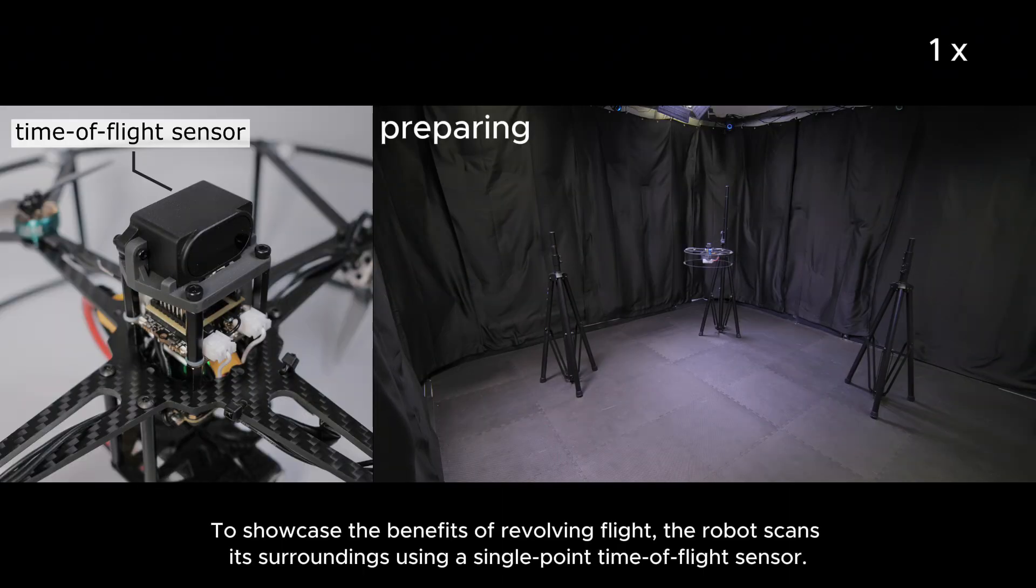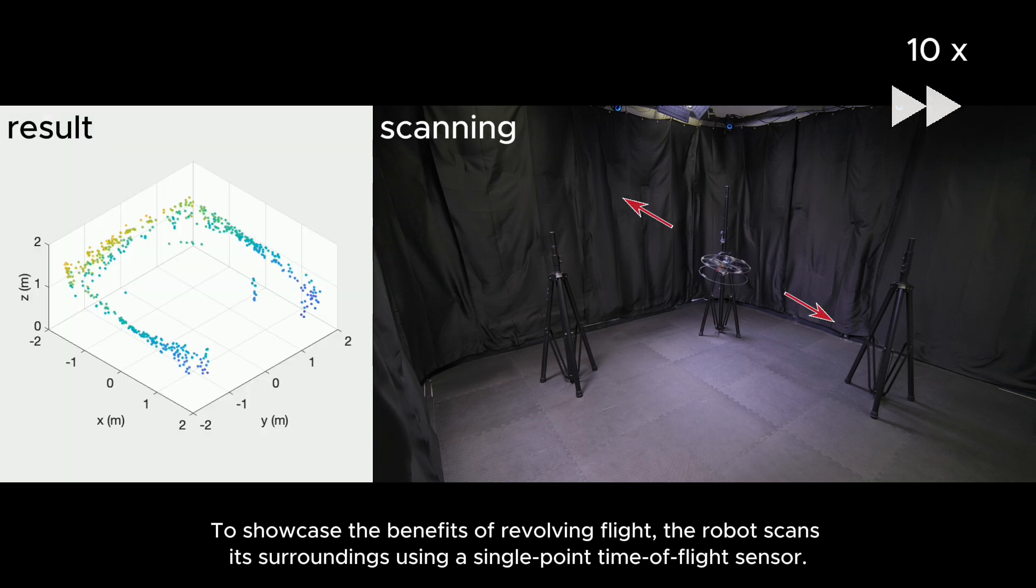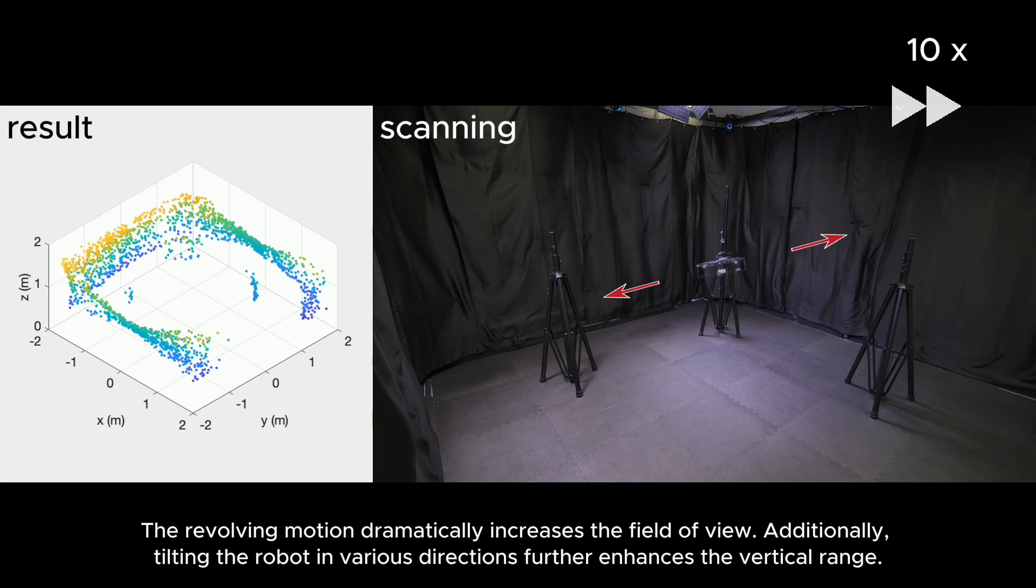To showcase the benefits of revolving flight, the robot scans its surroundings using a single point time of flight sensor. The revolving motion dramatically increases the field of view.